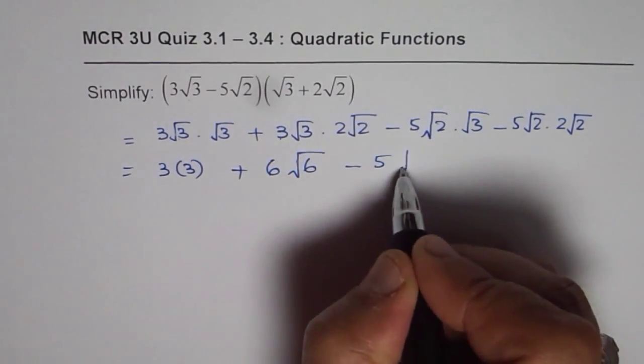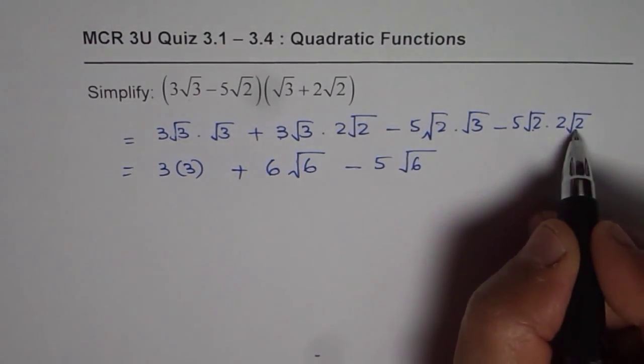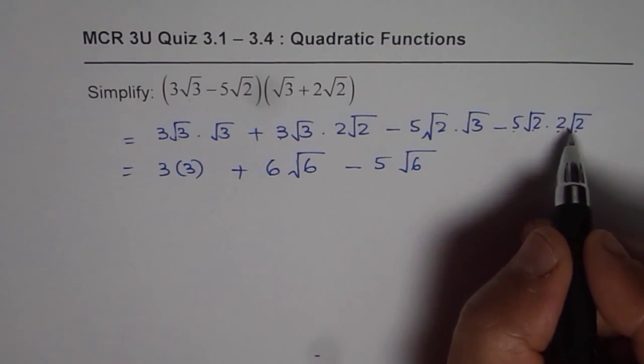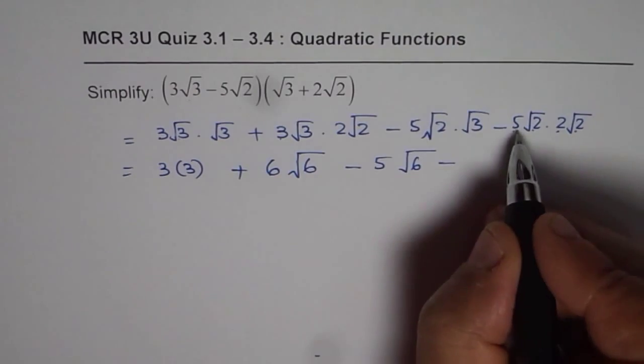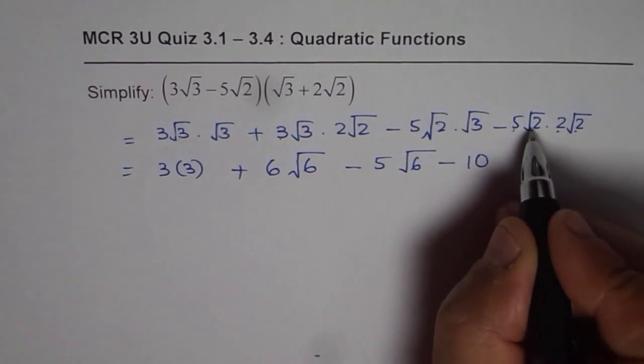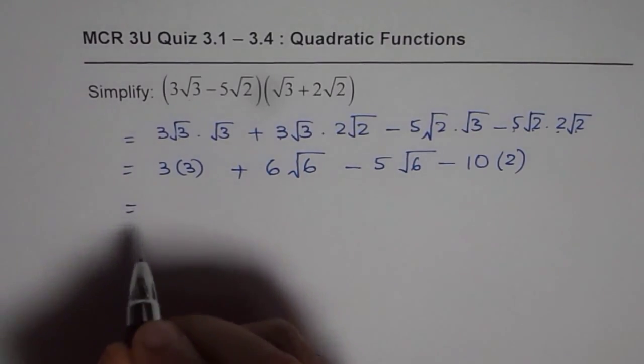2 times 3 is 6. In this case, square root 2 times square root 2 is 2. So 5 times 2 is 10, and 10 times 2 is 20. Let me first write it as 5 times 2 is 10, and then square root 2 times square root 2 is 2. Then we will simplify the next step.